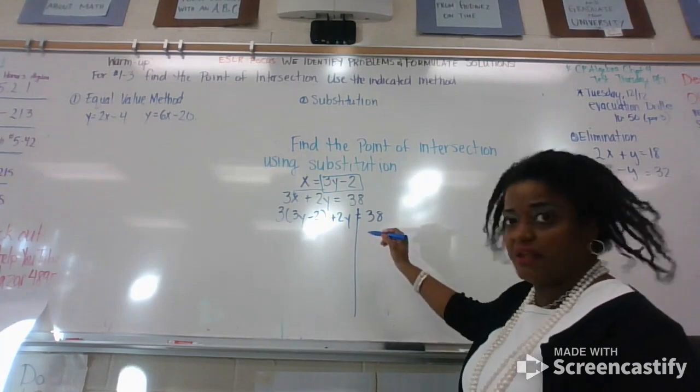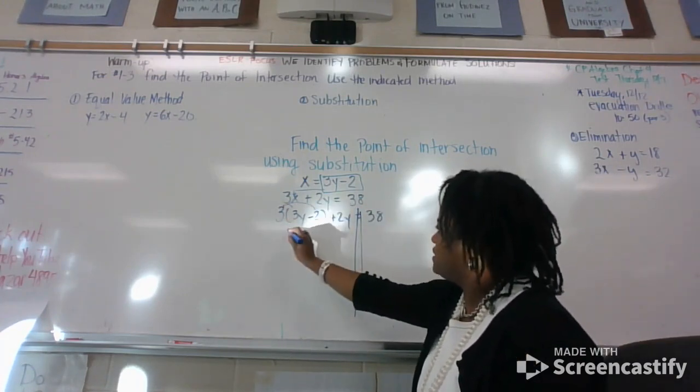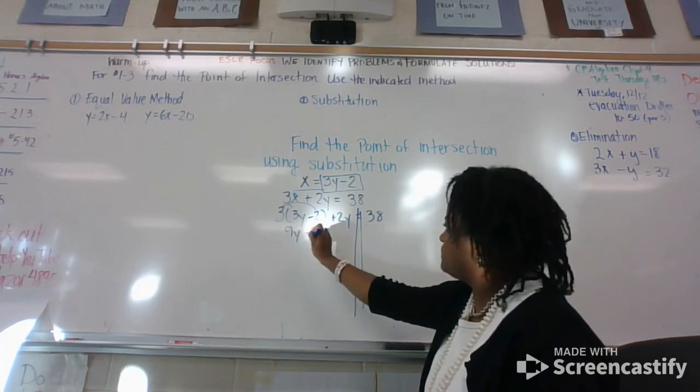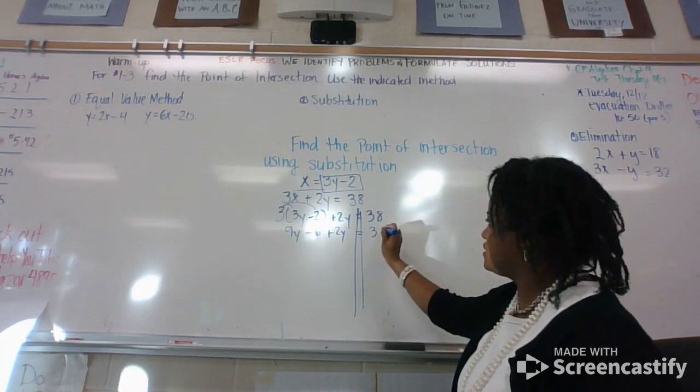Train tracks, if you like. Three multiplies inside. Nine y minus six plus two y equals 38.